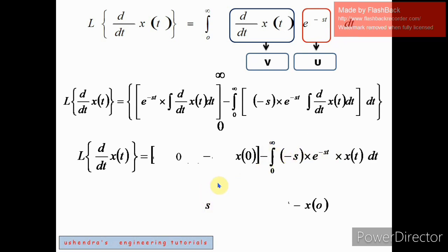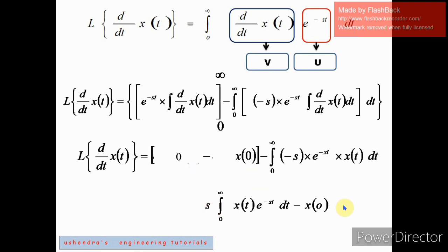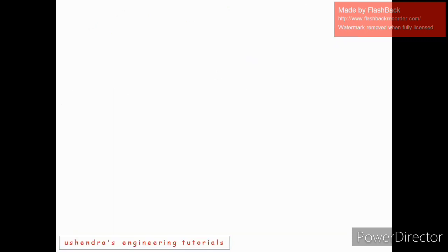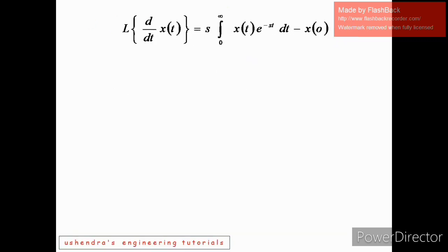Since integration is with respect to t, s has nothing to do inside the integration, so s comes out. This negative and that negative become positive. So we have s times the integral from 0 to infinity of x(t) e^(-st) dt. The entire equation is equal to the Laplace transform of d/dt of x(t): Laplace transform of the derivative of x(t) equals s times the integral from 0 to infinity of x(t) e^(-st) dt, minus x(0).